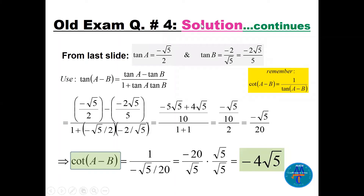From the previous work: tan(a) = −√5/2 and tan(b) = −2/√5, rationalized as −2√5/5. Applying the formula tan(a − b) = [tan(a) − tan(b)] / [1 + tan(a)·tan(b)]: numerator is −√5/2 − (−2√5/5) and denominator is 1 + (−√5/2)(−2/√5). Notice that tan(a)·tan(b) = (−√5/2)(−2/√5) = 1, which simplifies the denominator to 1 + 1 = 2.